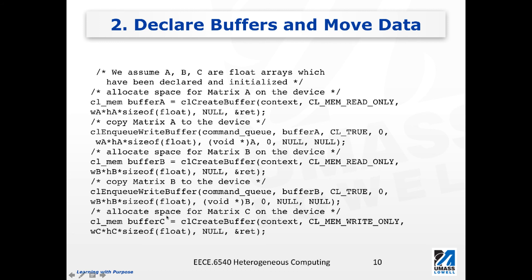The next step is to allocate space for matrix C, which is the output matrix. From the device's point of view, matrix C has to be written with the calculation results, so when we create buffer C we declare it as CL_MEM_WRITE_ONLY because the device only writes results to this buffer. Even though buffer C is declared write-only for the device, it does not prevent the host from reading it — and that is what we must do, since eventually the host has to retrieve the results from the device and copy the resulting matrix from buffer C to host memory.